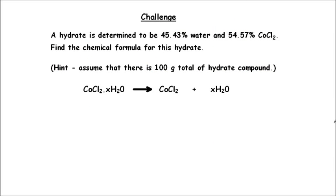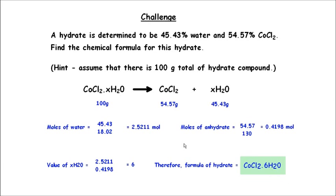The last one we're going to look at is a challenge for you. The hydrate is determined to be 45.43% water and 54.57% cobalt chloride — find the chemical formula for this hydrate. There's a little hint there to help you if you're not sure. Pause the video, have a go at it, and then I'll show the answer. Here is the answer along with the workings out. I hope this has really helped you with determination of xH₂O and has made it simpler than you may have thought. Good luck.